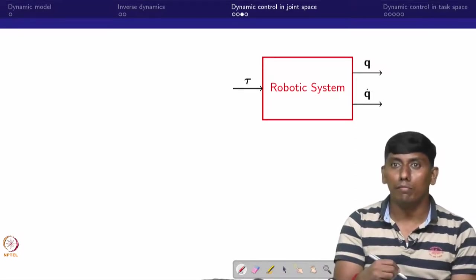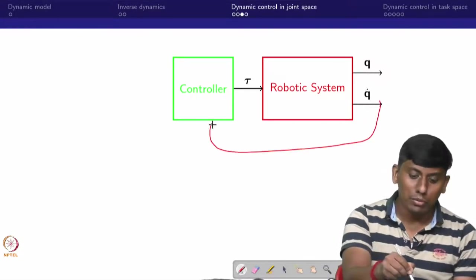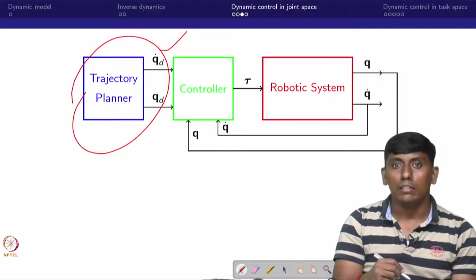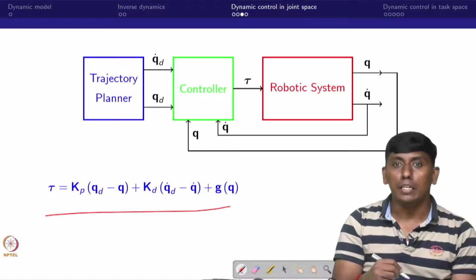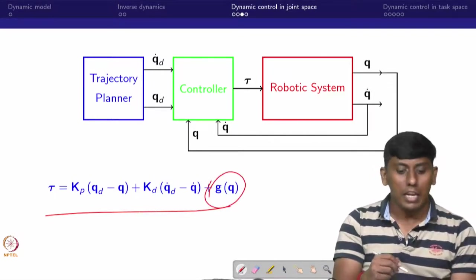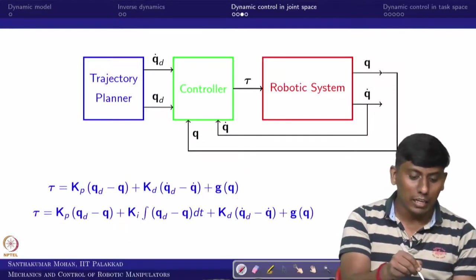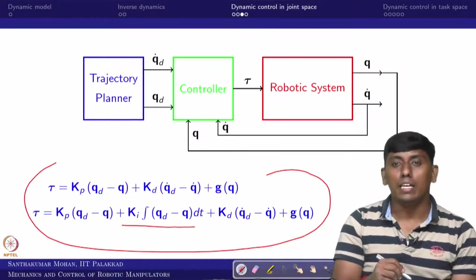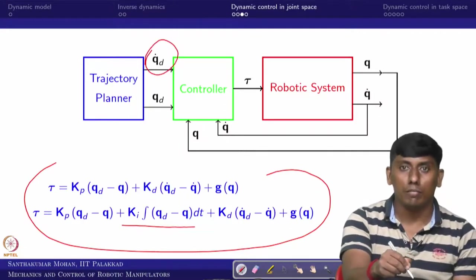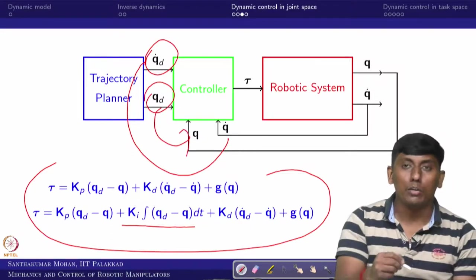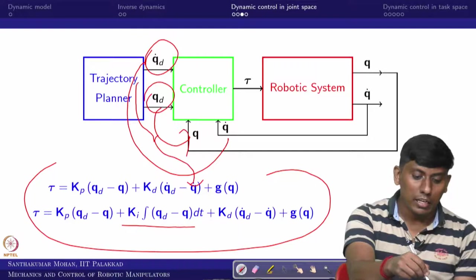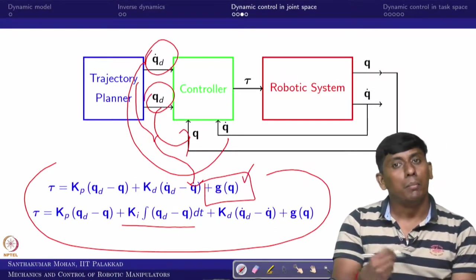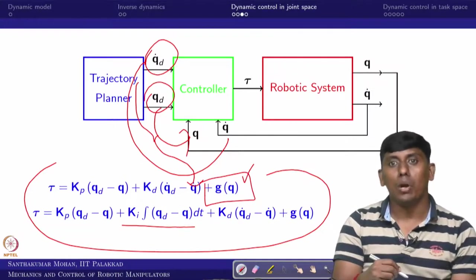We can see the same thing in block diagram form. This is the control. The feedback and the trajectory planner give Q-dot-desired and Q-desired. This is simple PD control along with gravity compensation. The same thing can be extended with PID — an I-term is added. This is simple motion-based control. There is no feedback linearization or feed-forward; we compare the reference and error directly.